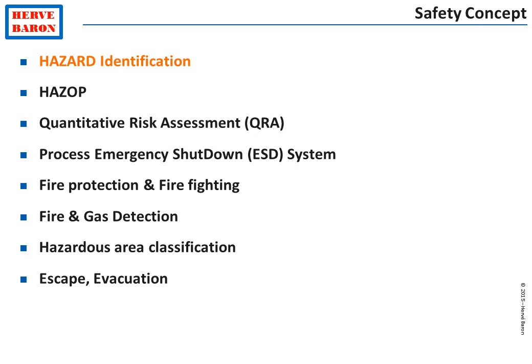This document is called a Discipline Design Specification. It is the document that each discipline should issue prior to starting its design. It lists all the criteria that the discipline will use in its design work, such as applicable codes and standards and so on. We will review each of the headings of the Safety Concept. First of all, Hazard Identification.